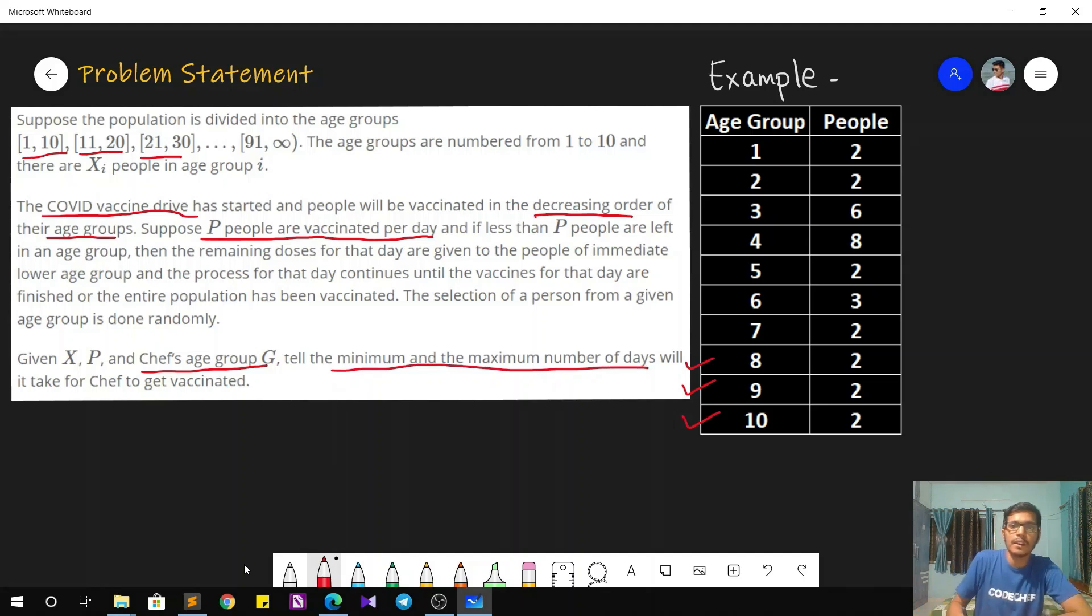So for example, like we have this data over here in this table, we have 10 age groups and number of people in each age group. And let's say it is given to us that P is equals to 2. That is 2 people can be vaccinated per day and also G is equals to 5. That is chef is present in age group 5. So we have to find out what is the minimum number and maximum number of days in which chef will get vaccinated. So how to do that, let's understand this same test case as well as the solution approach.